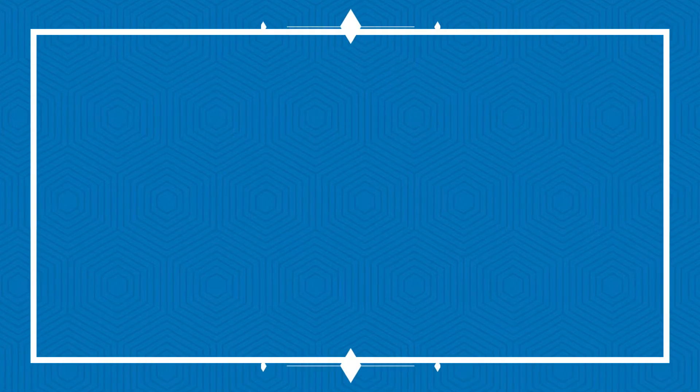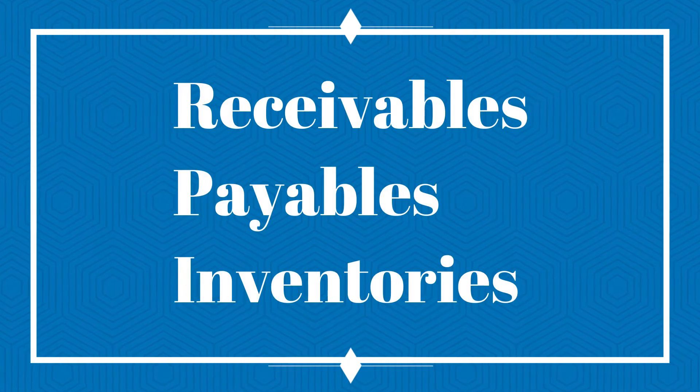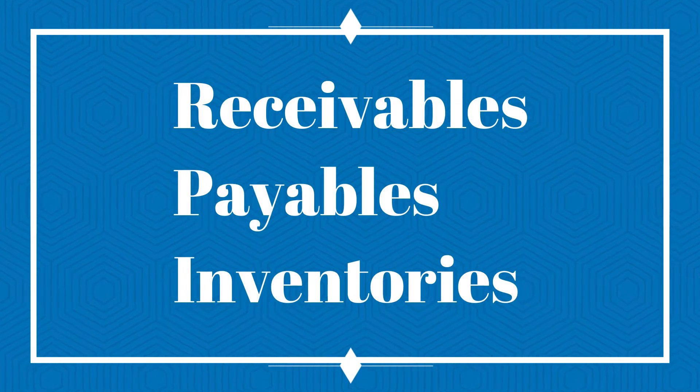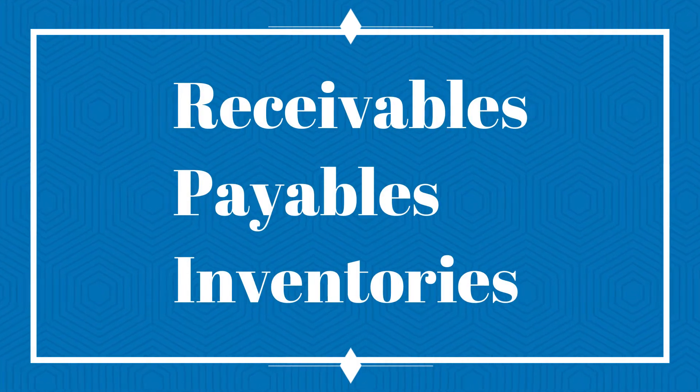With the concept of working capital, there are three main items we usually look at when analyzing working capital for a business. Those three items are receivables, inventories, and payables. I'll go through them one by one.